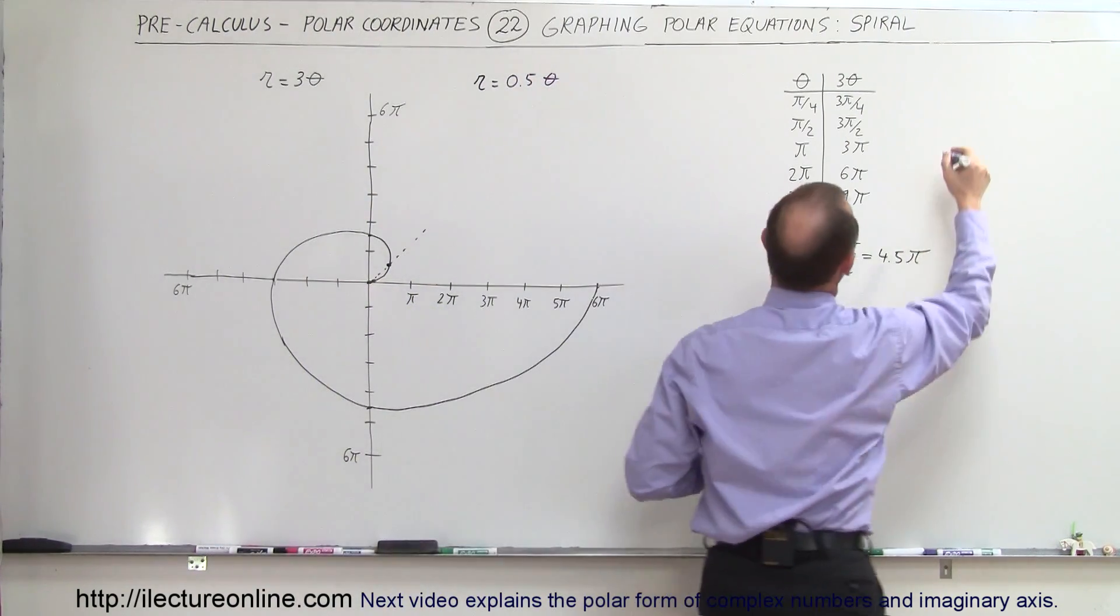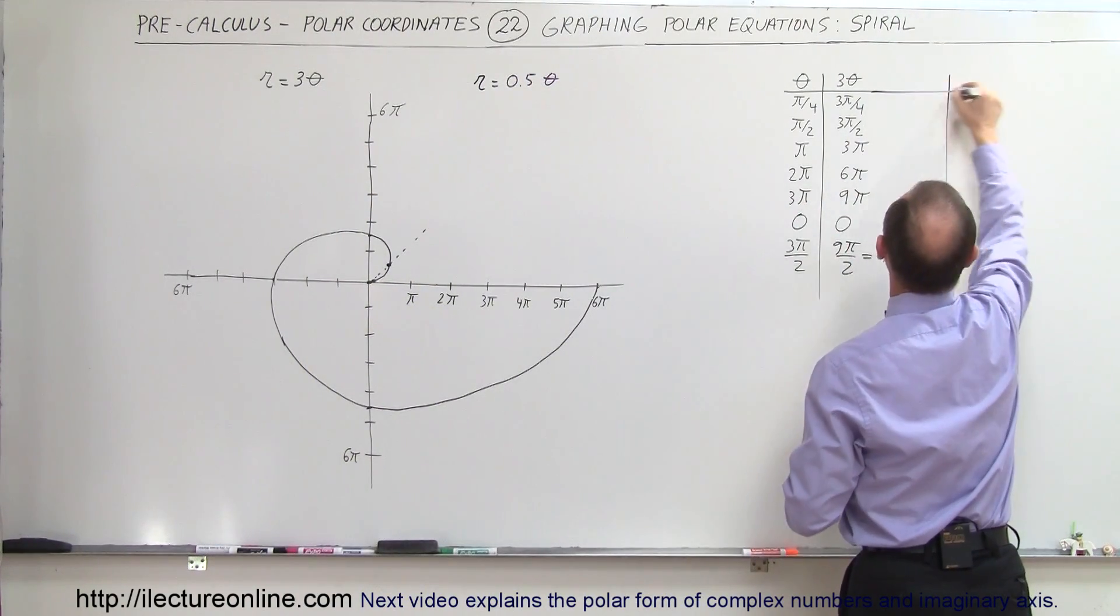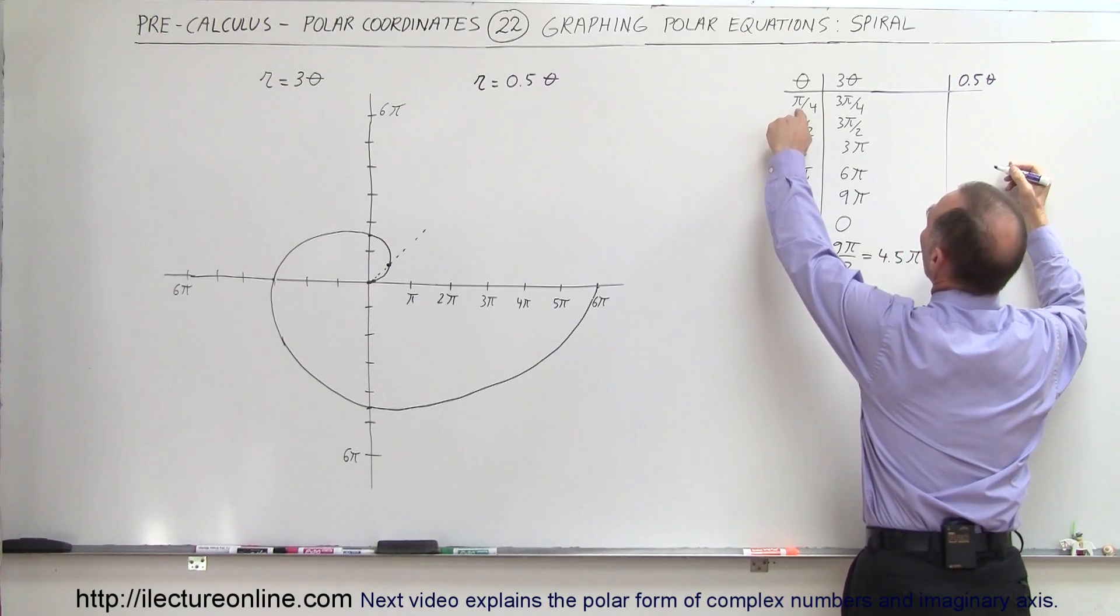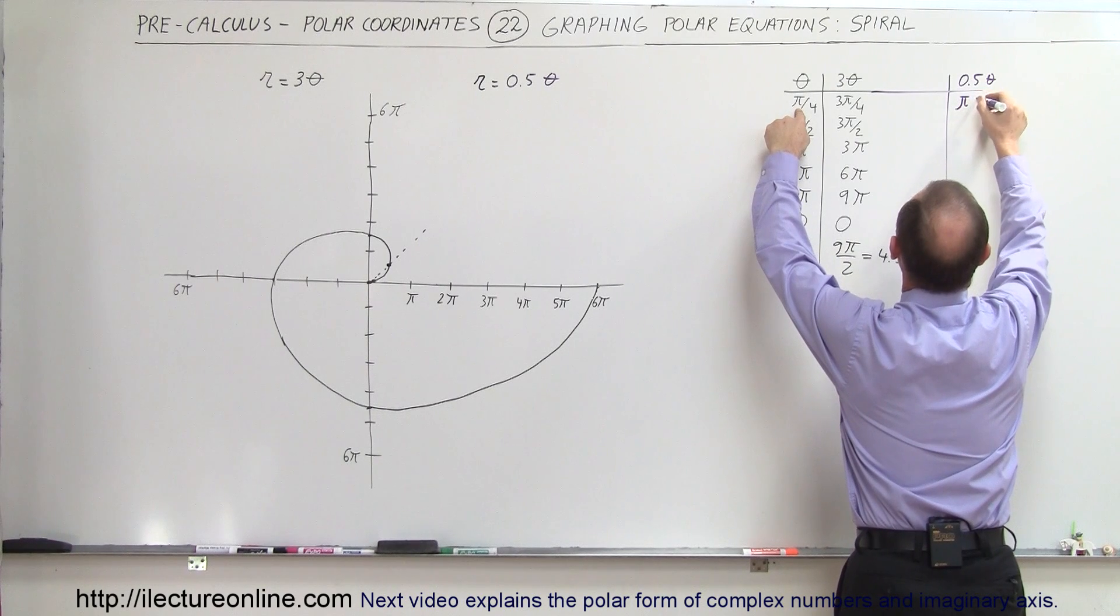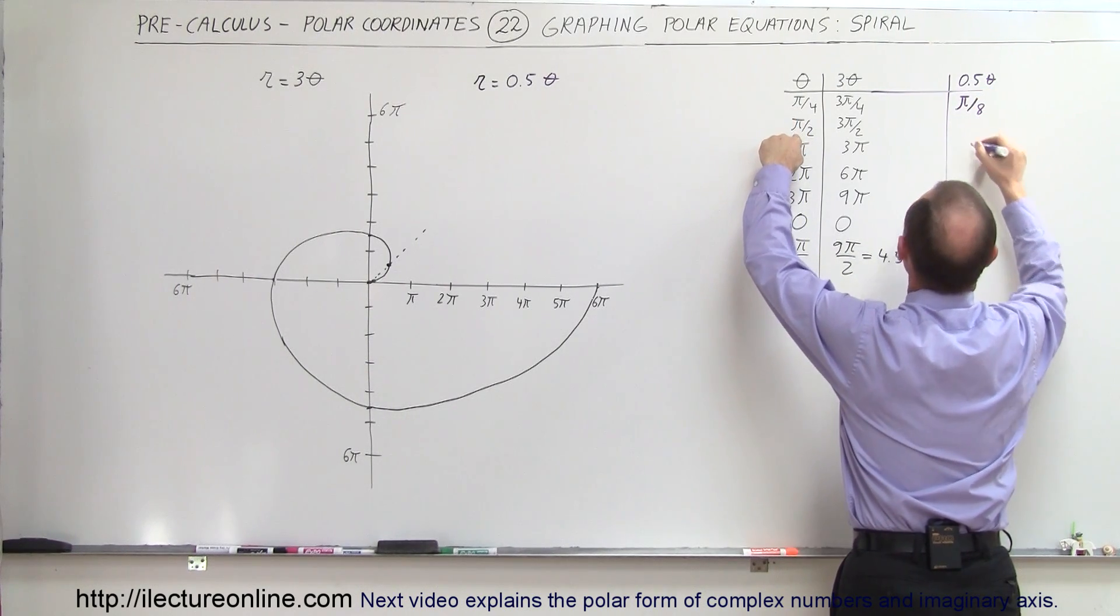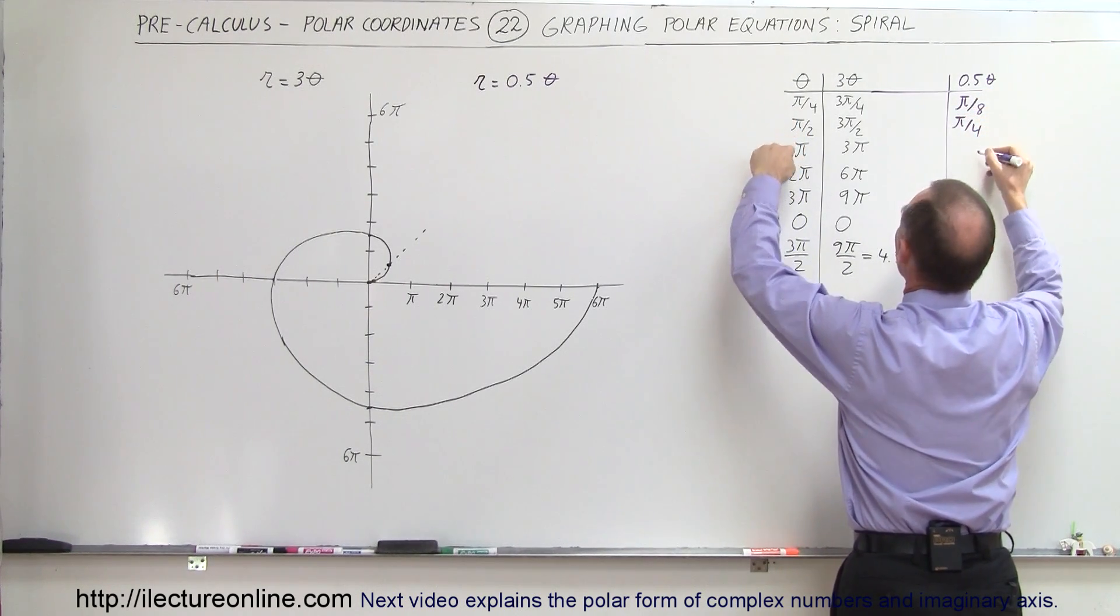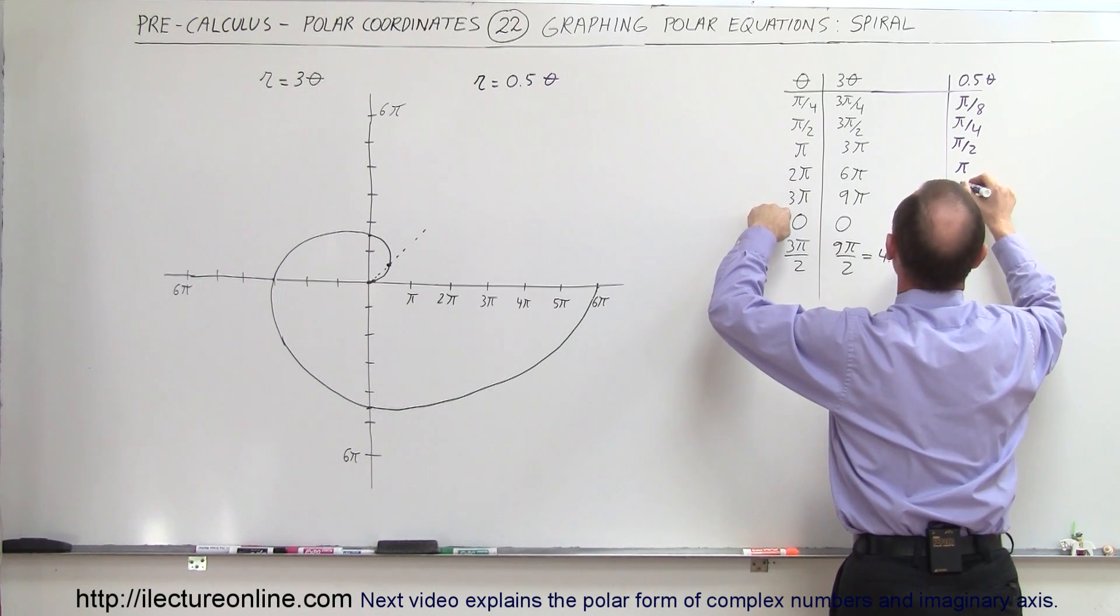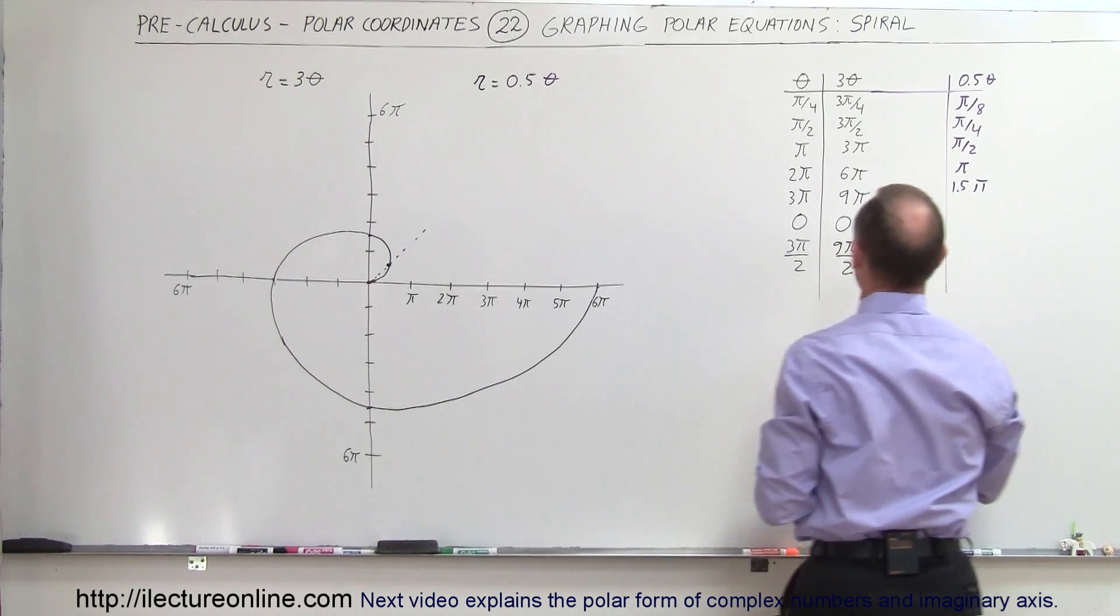So let's go ahead and put another column on here. So let's say that this is 0.5 times theta. So when theta is π over 4, then the radius would be π over 8. At π over 2, that would be π over 4. At π, that would be π divided by 2. At 2π, that would be π.